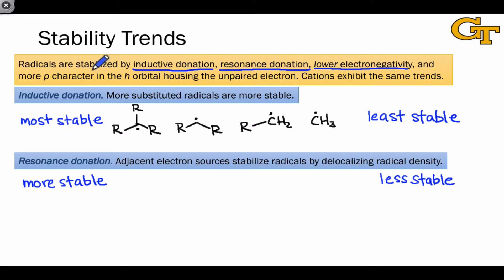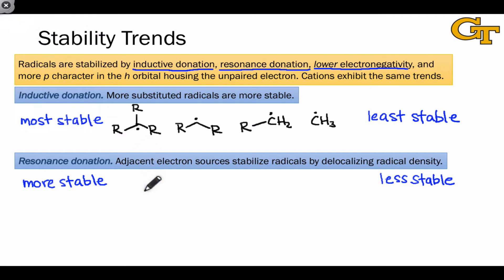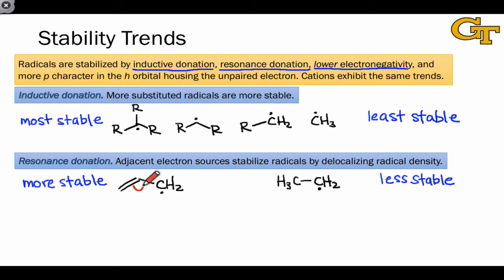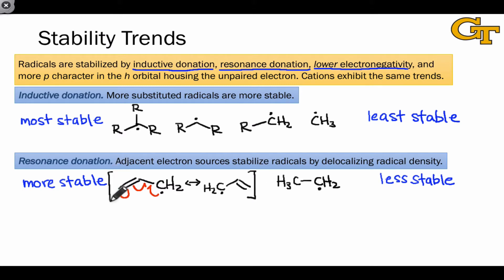When it comes to resonance, any structural feature that delocalizes the radical density — that is, puts radical character on more than one atom — is going to stabilize the molecule. For example, we might compare the allyl radical, which bears a double bond adjacent to a radical center that appears to be primary, with a primary radical like the ethyl radical that lacks resonance. Internal electron flow in the allyl radical shows us that the unpaired electron is delocalized over the two end carbons. Just as if the radical electron were a charge, the delocalization of radical density stabilizes this molecule relative to the ethyl radical.